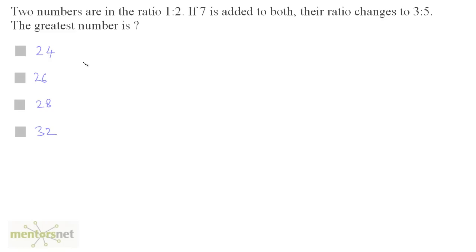Two numbers are in the ratio of 1:2. If 7 is added to both, their ratio changes to 3:5. What is the greatest number? This is also similar to the previous question.